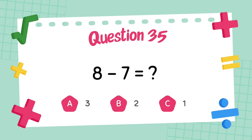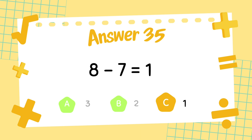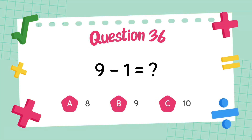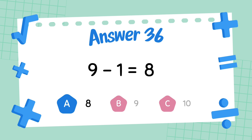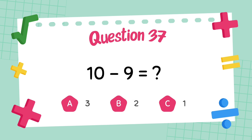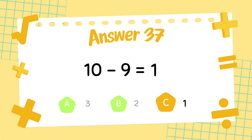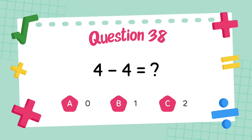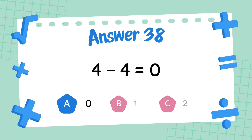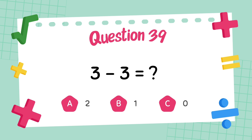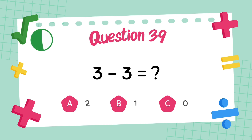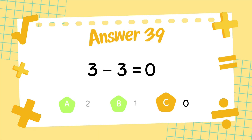What is 8 minus 7? The answer is 1. What is 4 minus 9? What is 9 minus 9? The answer is 1. What is 6 minus 7? What is 4 minus 4? The answer is zero. What is 3 minus 3? The answer is 6.